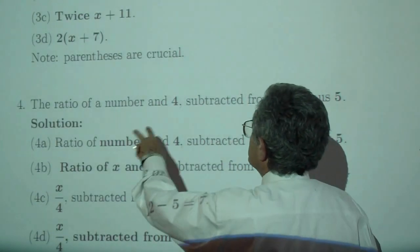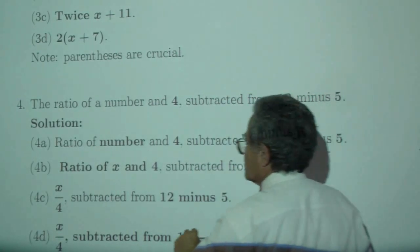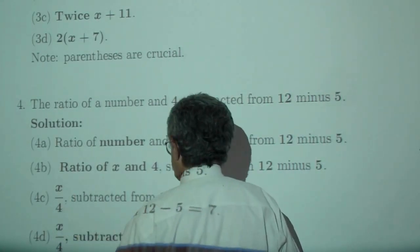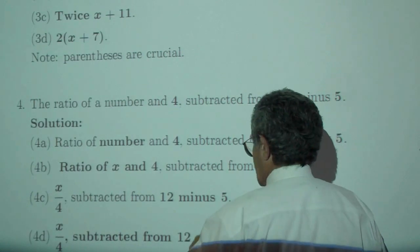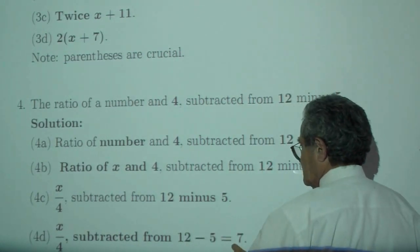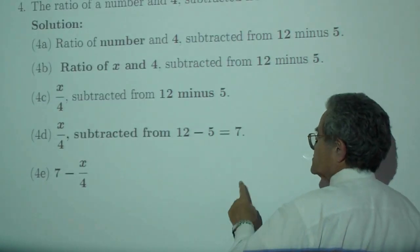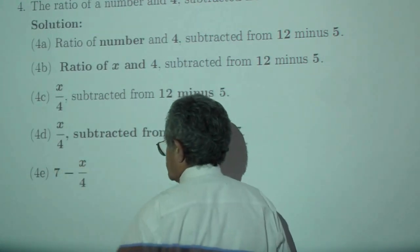The ratio of a number and 4. All that is subtracted from 12 minus 5, which is 7. So from 7, you take away x over 4.